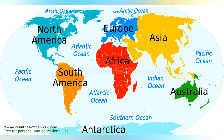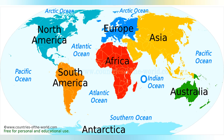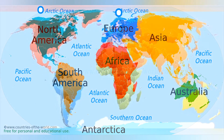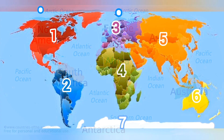The 7 continents are surrounded by a large body of water called the ocean. And these are the Pacific Ocean, the Atlantic Ocean, the Southern Ocean, the Indian Ocean, and the Arctic Ocean.